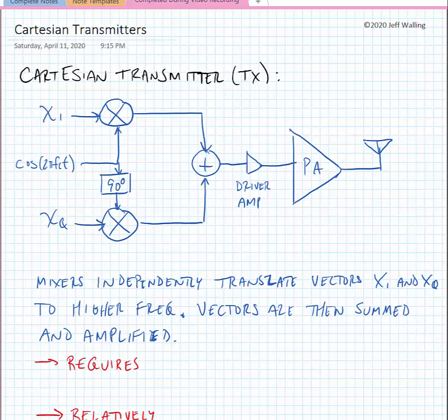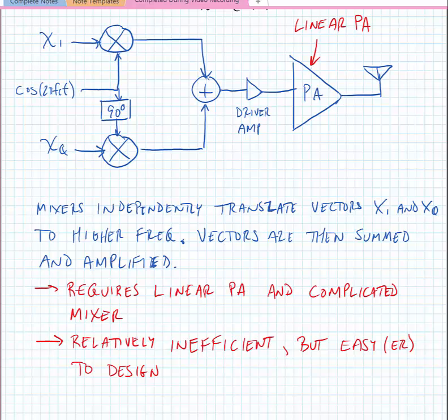It's critical that the mixers themselves don't have very much feed through and that they're balanced very well. Additionally we also need to make sure that if we're amplifying signals that have amplitude modulation we have a very linear power amplifier. This requires a linear power amplifier if we're amplifying signals that have amplitude modulation and the mixer is relatively complicated.